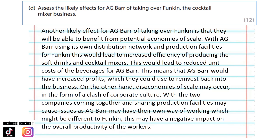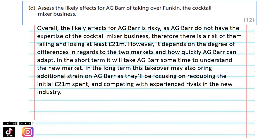For the final judgment, I've taken a stance that it's risky for them to be taking over Funkin. However, you might state that it's not risky, and that's perfectly fine as long as you're able to justify it and make sure that you have a fully supported final judgment. Overall, the likely effects for AG Bar is risky as AG Bar do not have the expertise of the cocktail mixer business. Therefore, there is a risk of them failing and losing at least £21 million. However, it depends on the degree of differences in regards to the two markets and how quickly AG Bar can adapt. In the short term, it will take AG Bar some time to understand the new market. In the long term, this takeover may also bring additional strain on AG Bar as they'll be focusing on recouping the initial £21 million spent and competing with experienced rivals in the industry.